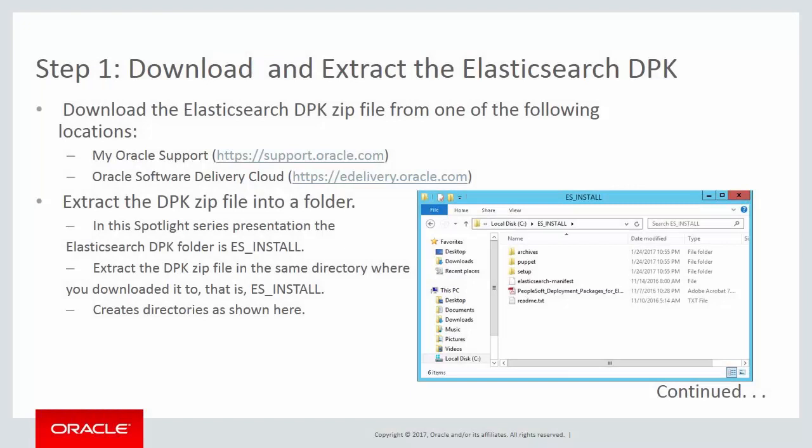The first step in deploying Elasticsearch is to download the Elasticsearch DPK from My Oracle Support or from the Oracle Software Delivery Cloud. You must then extract the Elasticsearch DPK zip file — download it to an empty directory and extract the entire contents into that same directory. For this presentation, es_install is the download location. When you extract the file, several directories are created: an archives directory containing archives for deployment, a puppet directory with open source puppet software, and a setup directory with setup scripts.